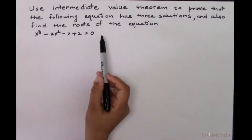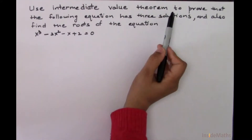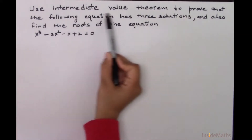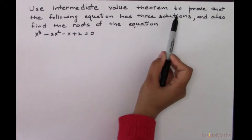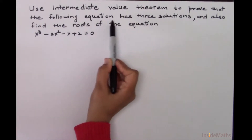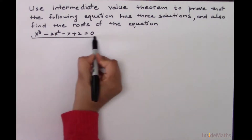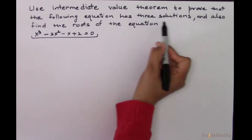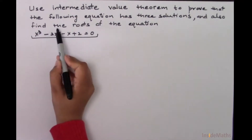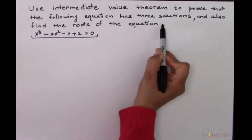This is an example of the Intermediate Value Theorem. We will use the Intermediate Value Theorem to prove that the following equation has three solutions, and also find the roots of this equation.